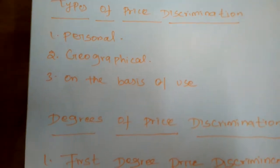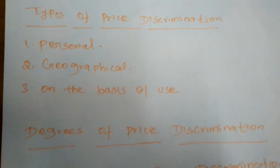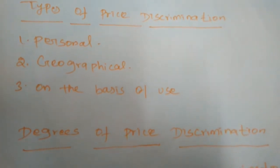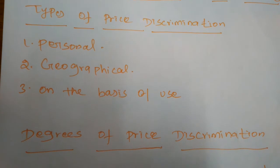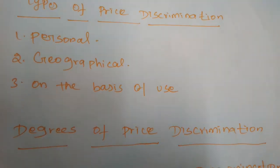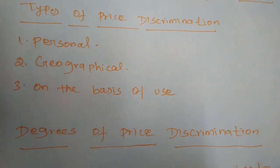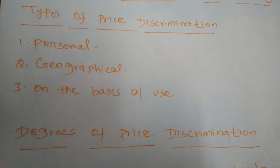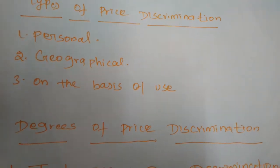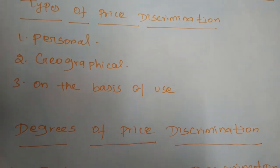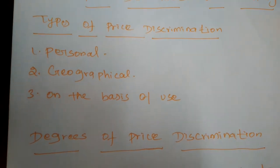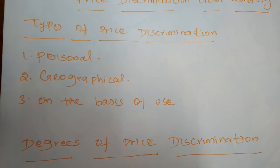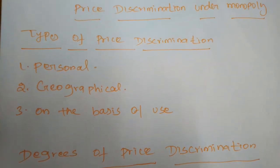Next, on the basis of usage, different prices are charged according to the usage of the product. Some products are used by people for different purposes — for example, electricity is used by entrepreneurs and by individual people in their homes. When electricity is used in commercial activity, they fix high prices, and for home purposes they give low prices. On the basis of these three categories, price is differentiated by the monopolist.